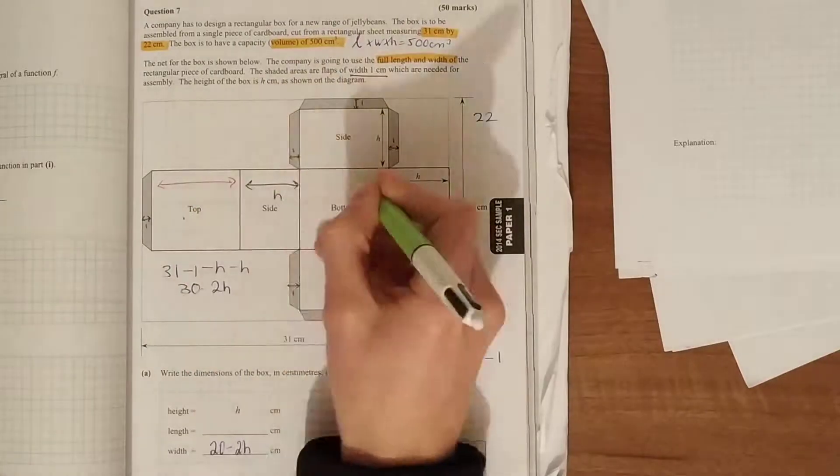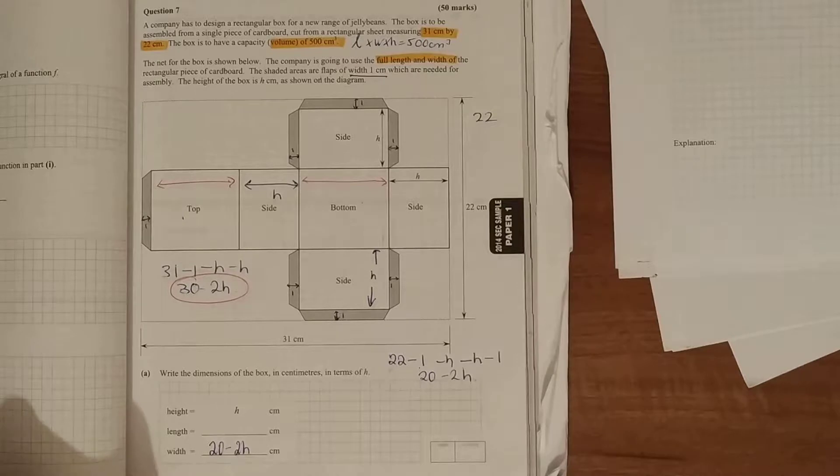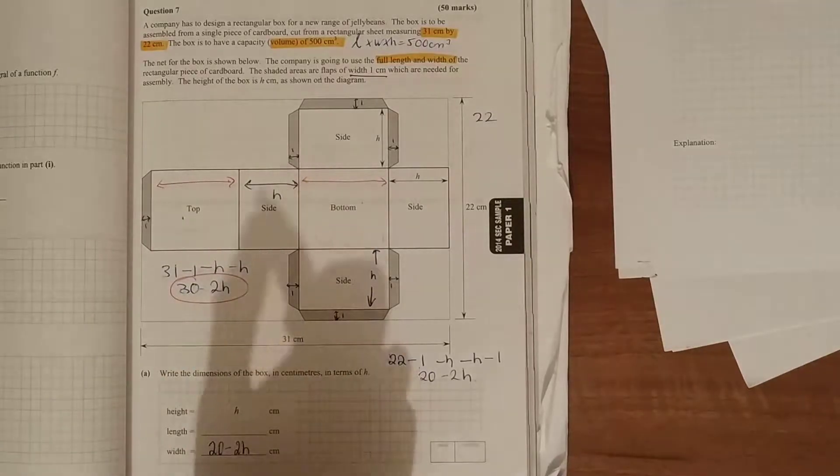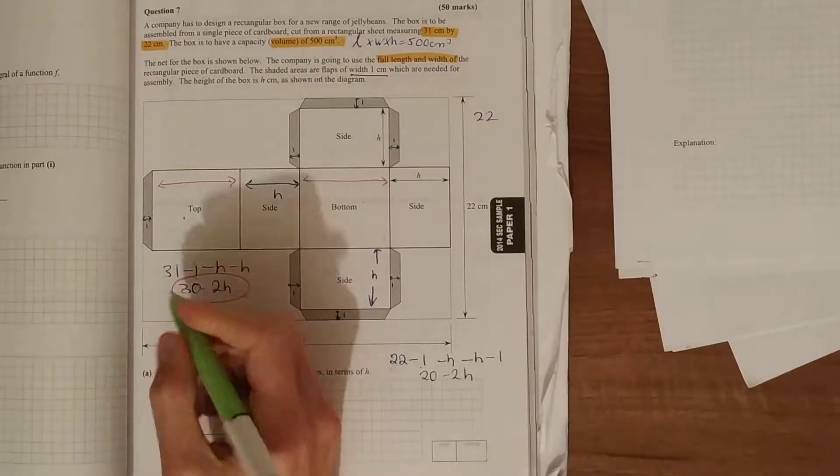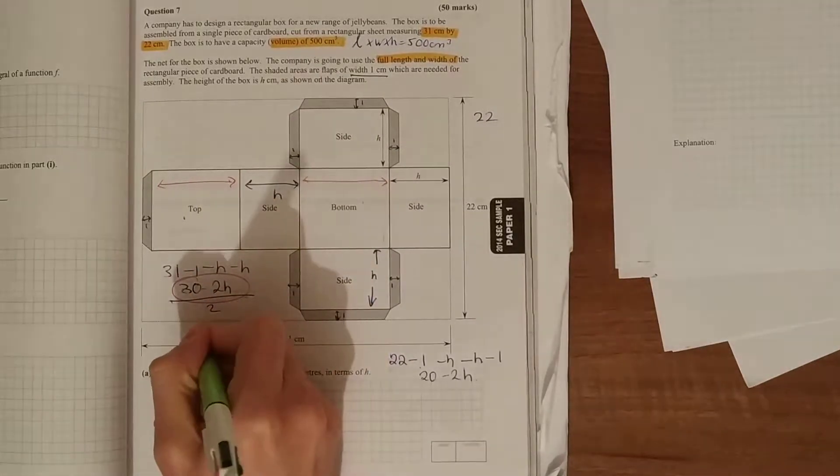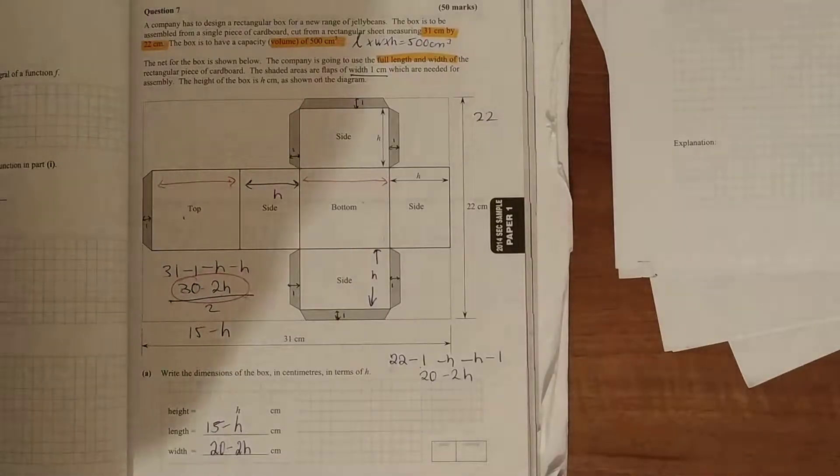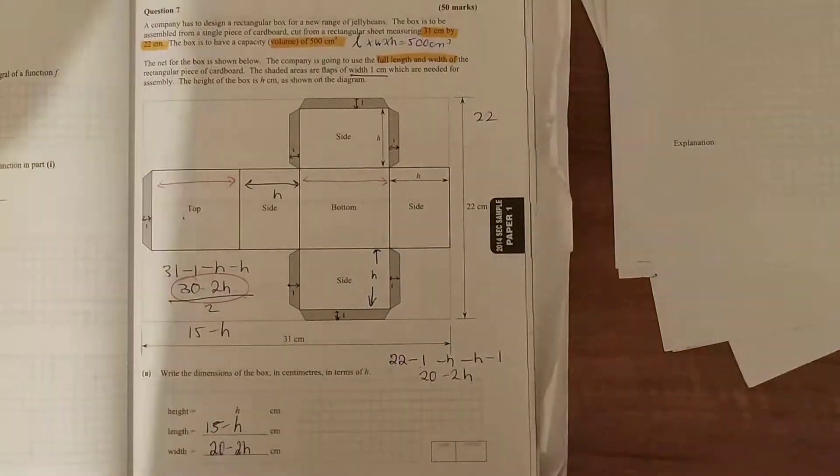Between that and that is going to be 30 minus 2h, and they're going to be the same size. So how do we work out the dimensions of each one? Divide that by 2. So we get 15 minus h. So your length is 15 minus h, your width is 20 minus 2h, and your height is h.